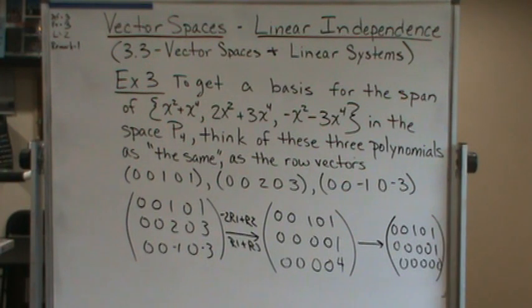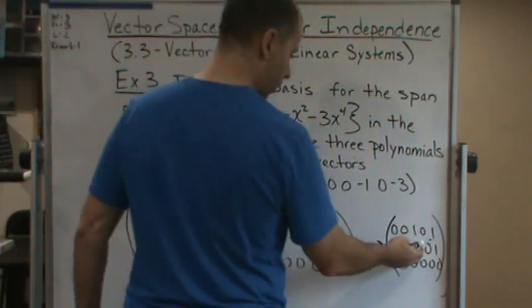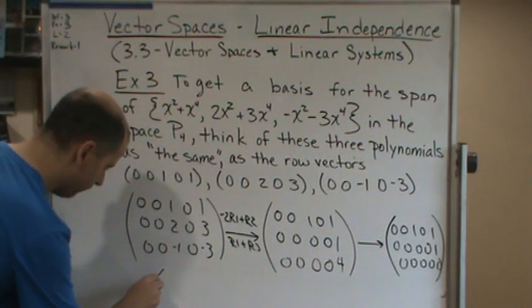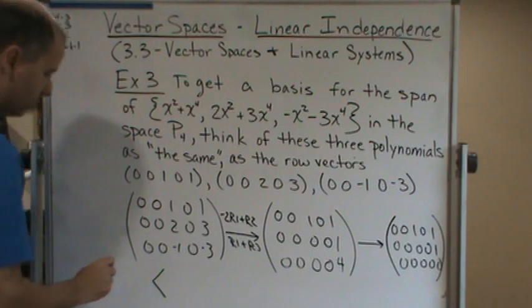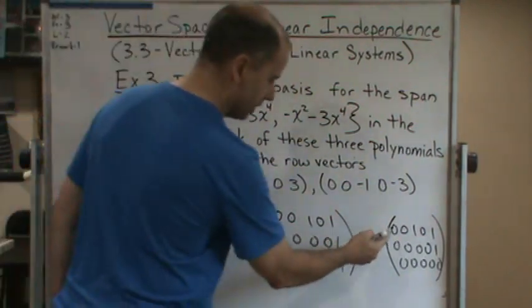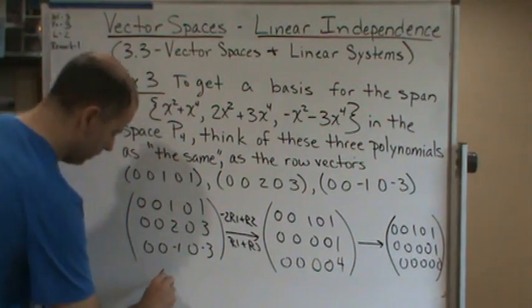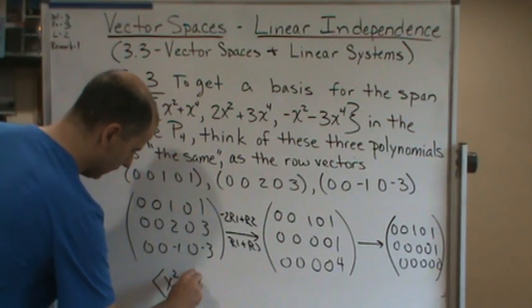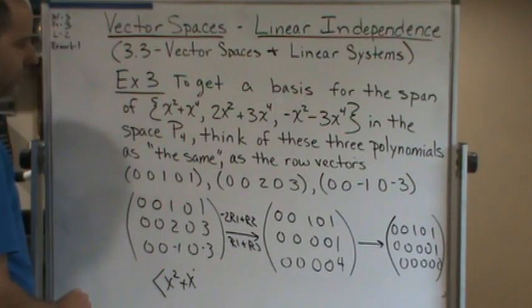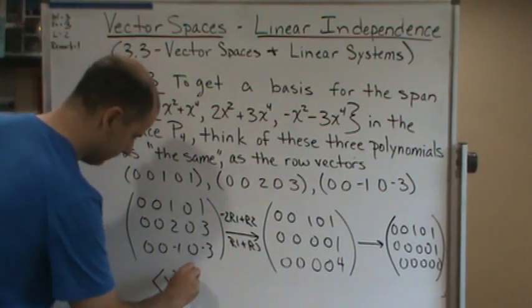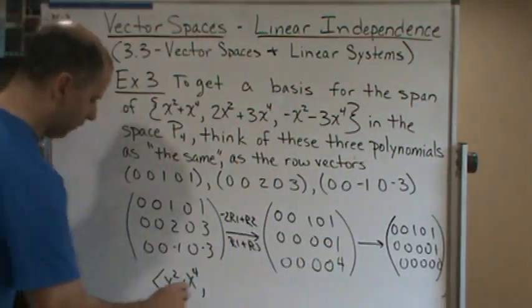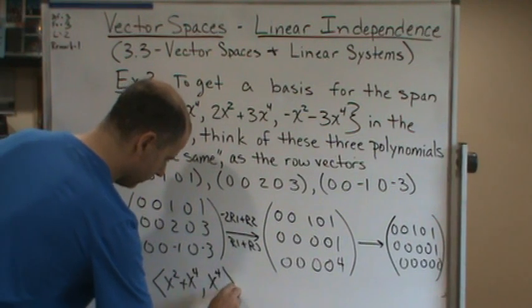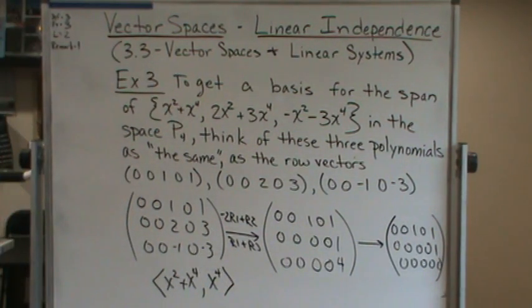And so now what we can do is translate this back to the basis. So now we can say that there's a basis for this set, the basis for the span of this set, which is going to be x squared plus x to the 4th, and then the next one is just x to the 4th. And there's our basis.